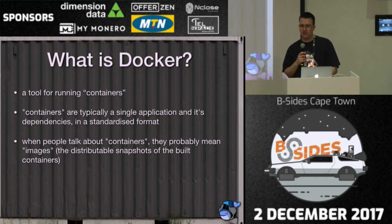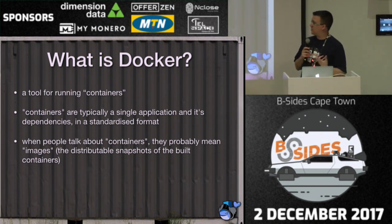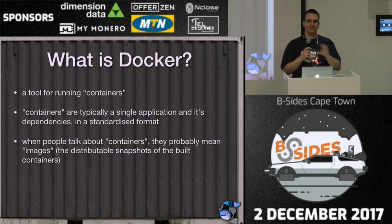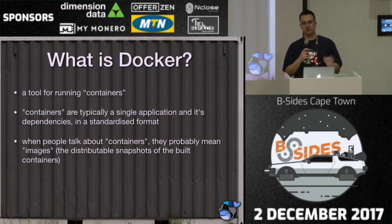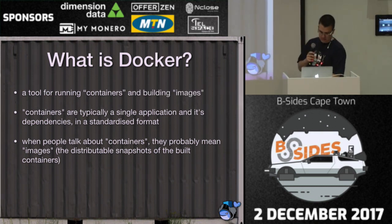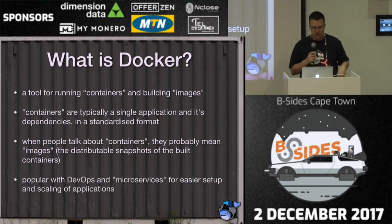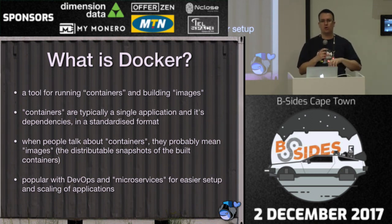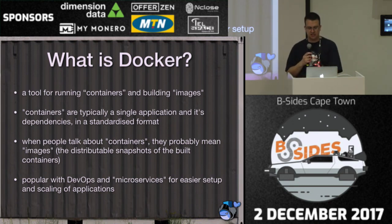A lot of times when people are talking about containers, what they actually mean is images. Images are a little bit like an ISO file — that's the collection of all the layers and parts of the information about what is to be run — and a container is an instance of that. So one image might be run 10 times, giving you 10 running containers but only one actual source image. Docker is really popular with DevOps and microservices because it allows you to very easily manage the deployment and scaling of these things.